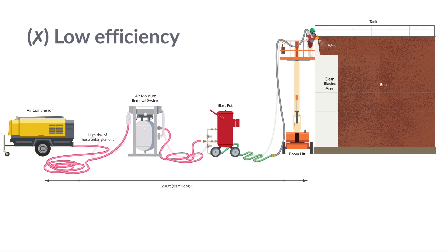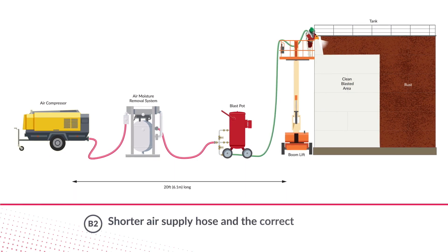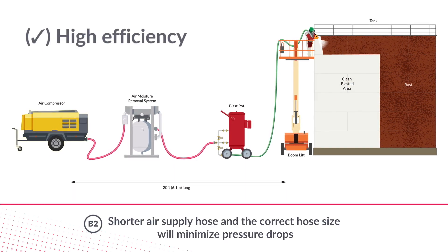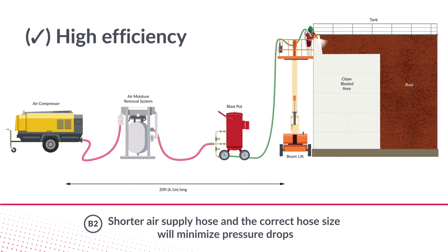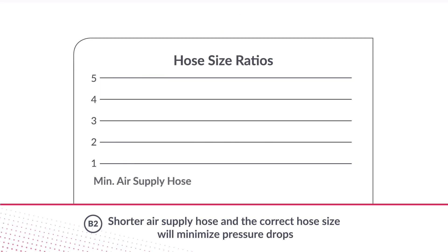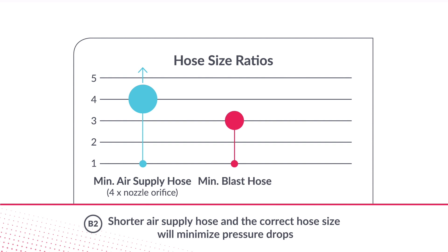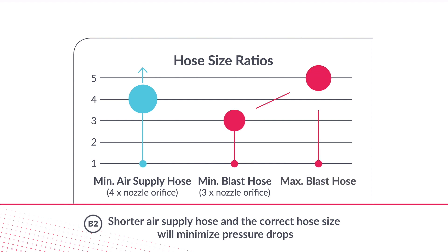Less sharp bends, a kinked hose, and a shorter air supply hose keeps pressure drop to a minimum. The minimum diameter for your air supply hose should be 4 times the blast nozzle orifice. For the blast hose, the minimum diameter should be 3 times the blast nozzle orifice, and the maximum diameter is 5 times the blast nozzle orifice.